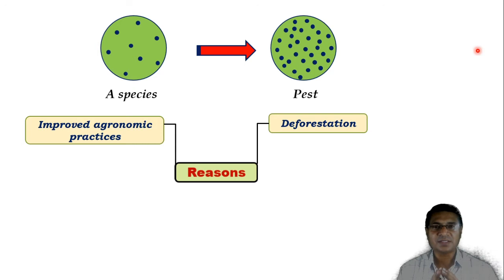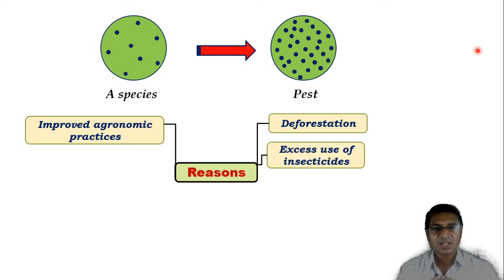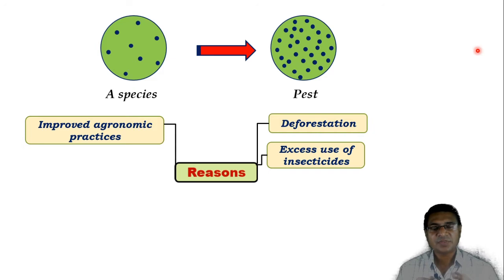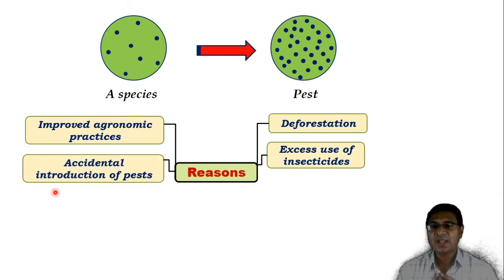Improved agronomic practices is also a very important point — increased use of nitrogen fertilizers, closer plantings, as well as use of granular insecticides create severe problems in the agriculture field. Another point is the excess use of insecticides, where the natural enemies that attack pests are killed by these insecticides, and this condition becomes favorable for the pest to increase their population.